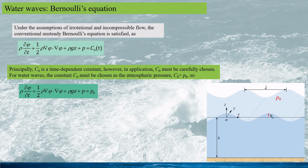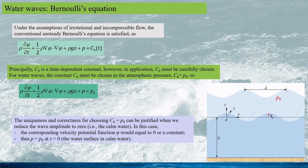In this application, C0 must be chosen as the atmospheric pressure P0, so the Bernoulli equation can be written accordingly. The justification for C0 equaling P0 can be confirmed when we reduce the wave amplitude to zero, giving calm water. In that case, the velocity potential function Phi equals zero or a constant, and thus P equals P0 at z equals 0 at the surface in calm water. Choosing any other constant for C0 would be incorrect in this application.